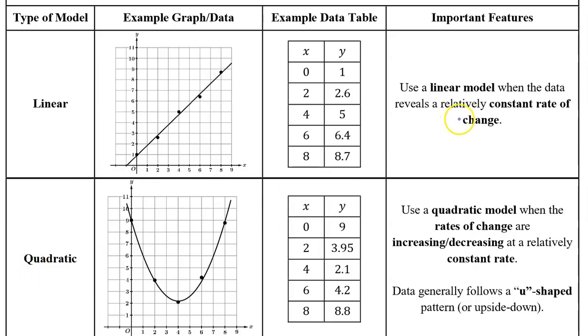You're going to use a linear model when the data reveals a relatively constant rate of change. For example, in this data, for equal length input value intervals, the output value change is always about 2. And obviously, if the data points form a line shape, there's a good chance we need a linear model.